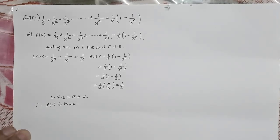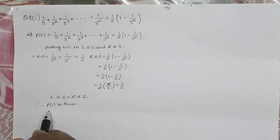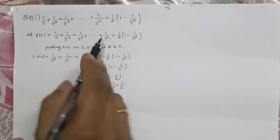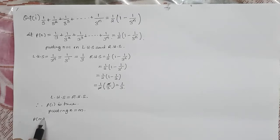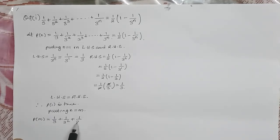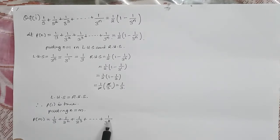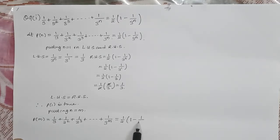Next step: after proving P(1) is true, I'll substitute n = m. Putting n = m, the entire series P(m) is: 1/3 + 1/3² + 1/3³ + ... + 1/3ᵐ = (1/2)(1 - 1/3ᵐ). P(m) is assumed to be true.